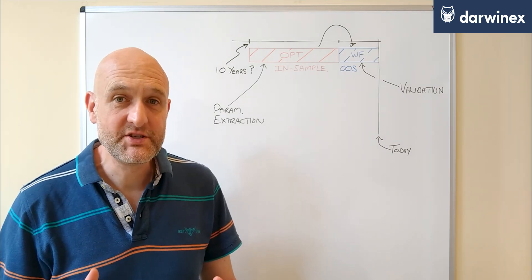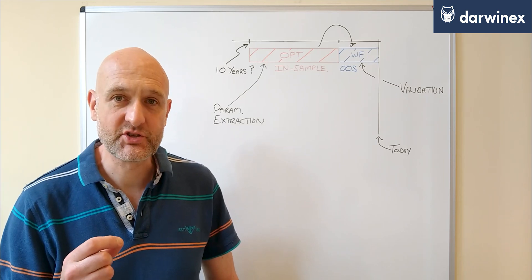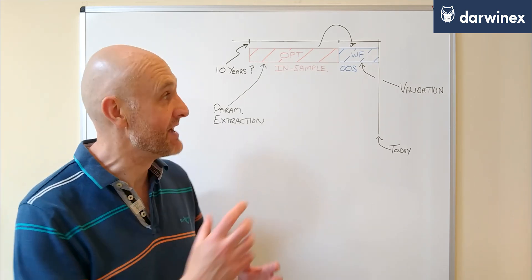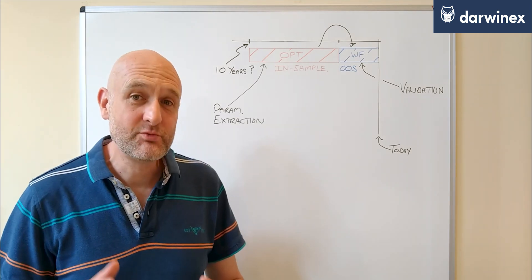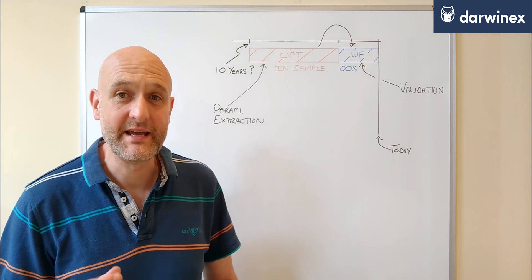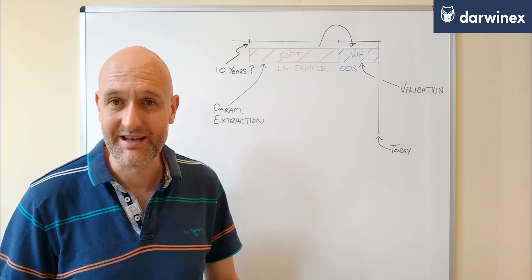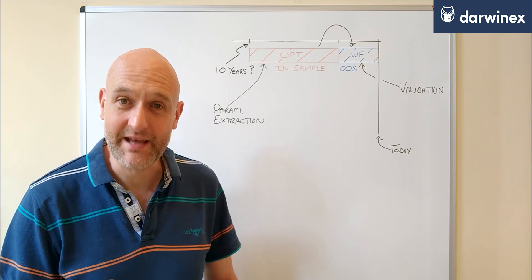The optimization phase in fact had one and only one purpose, and that was to help you extract the parameters that you then used in the walk-forward phase. It's these walk-forward results that will most closely represent what you would obtain if you traded those parameters in a live account, which is why it's these that should be used to make that decision.